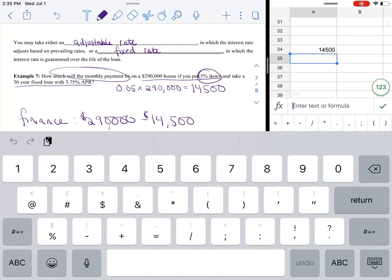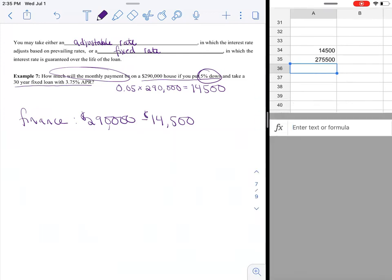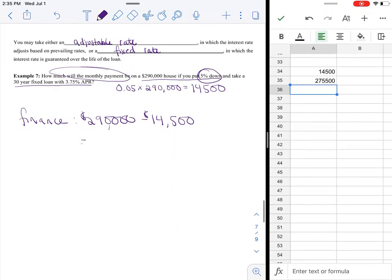So two hundred and ninety thousand - oh, forgot my equal sign - equals 290,123, watch those zeros, that's a very common thing I mess up on at least. So really I'm financing two hundred and seventy five thousand five hundred dollars.